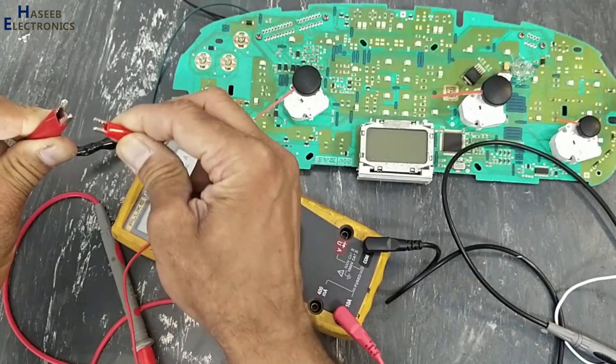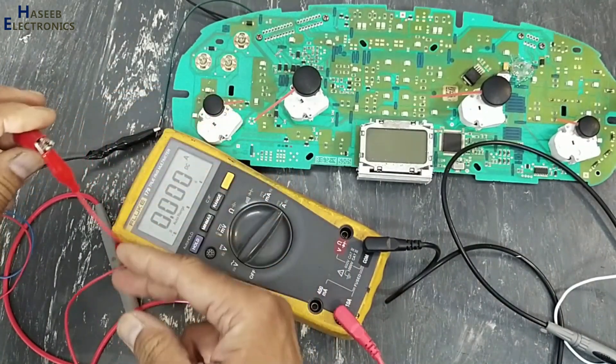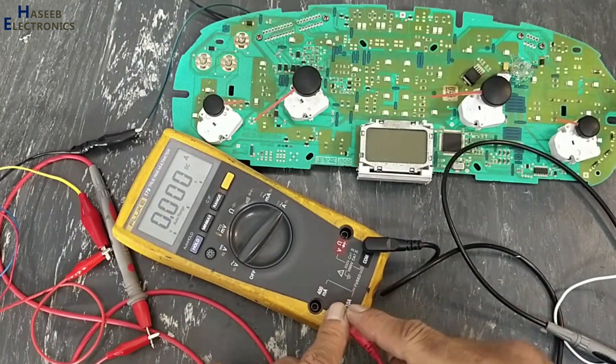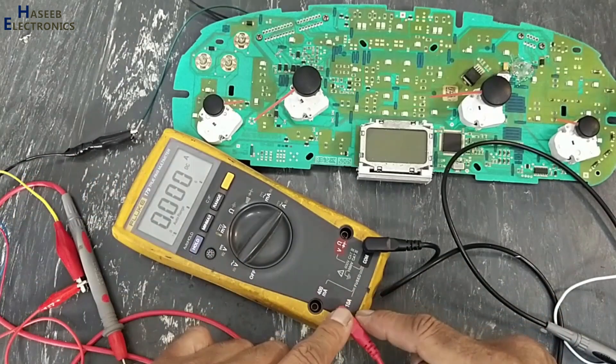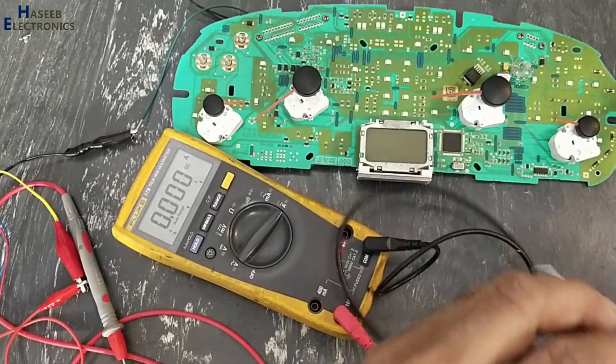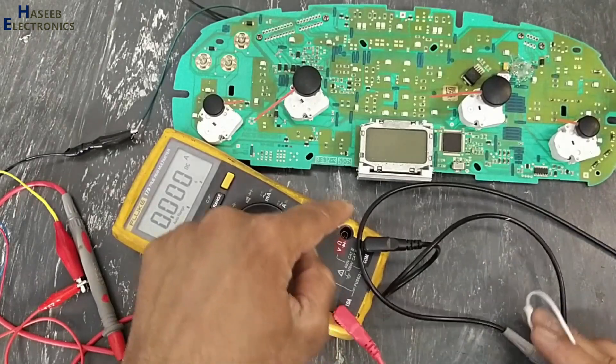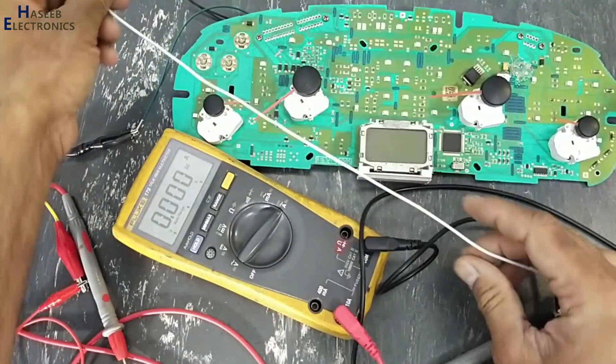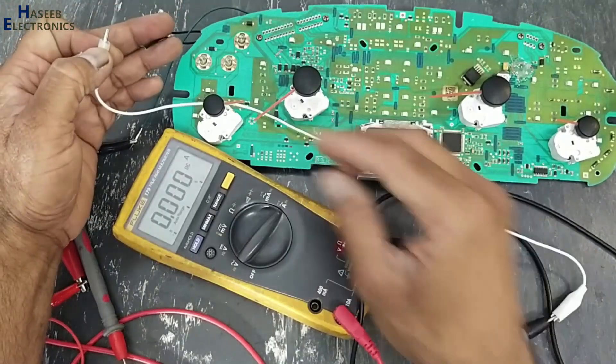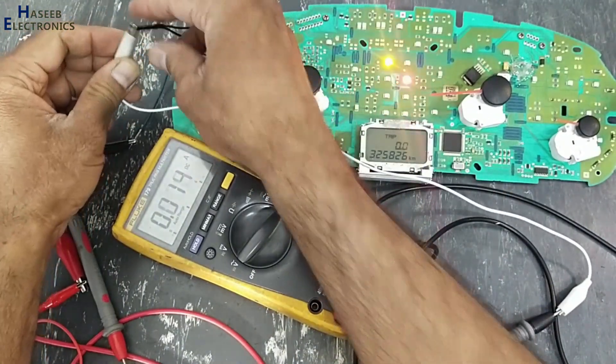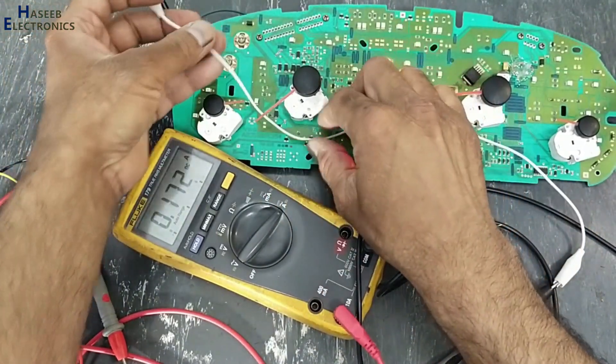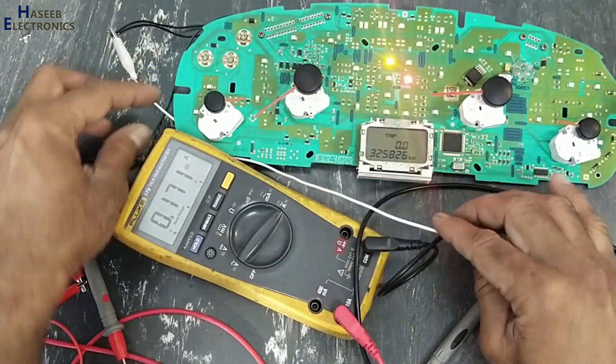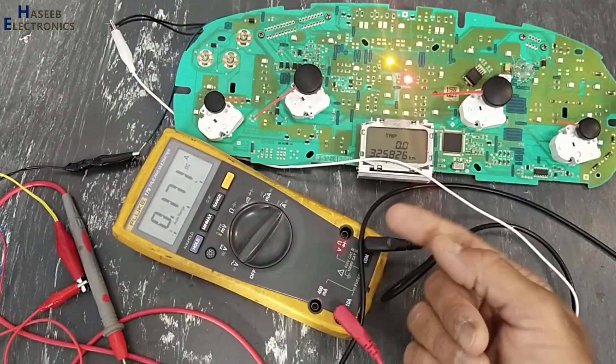I will open this circuit from positive line and we will connect positive line of the battery to this input socket. This is entrance and this is exit so we will connect this exit point to this terminal. Now it is measuring 171 milliampere.